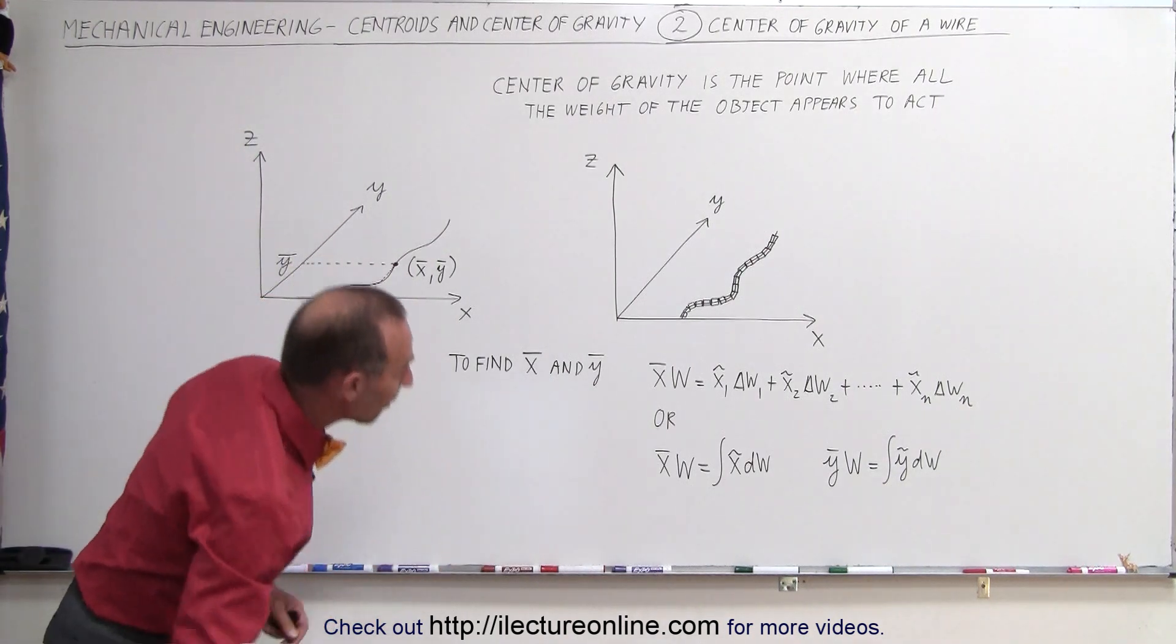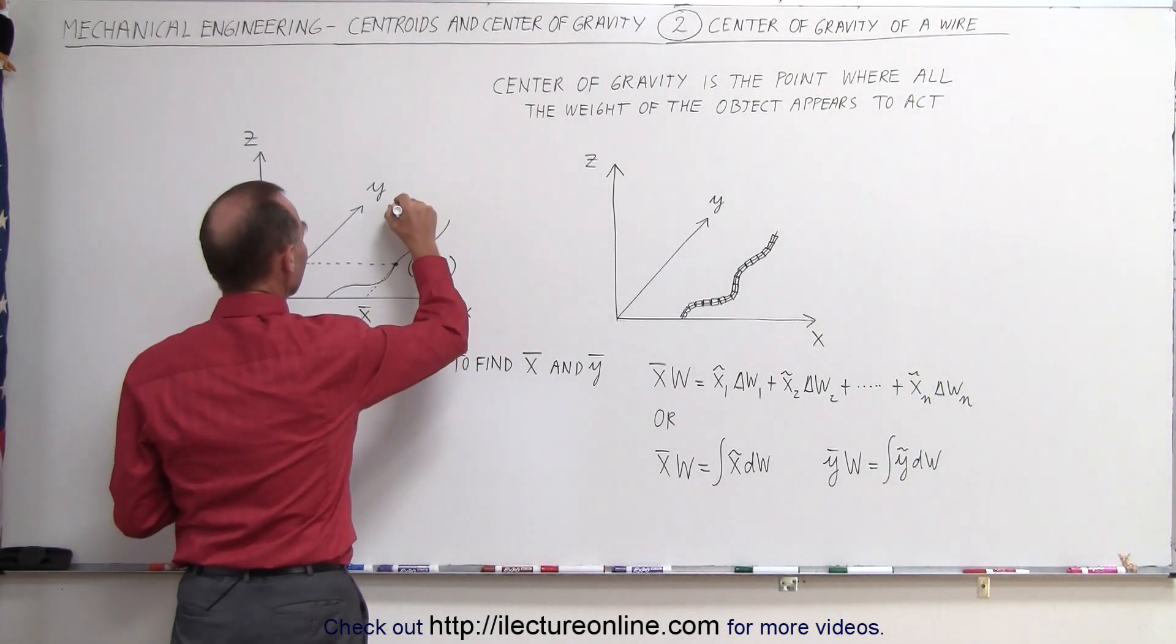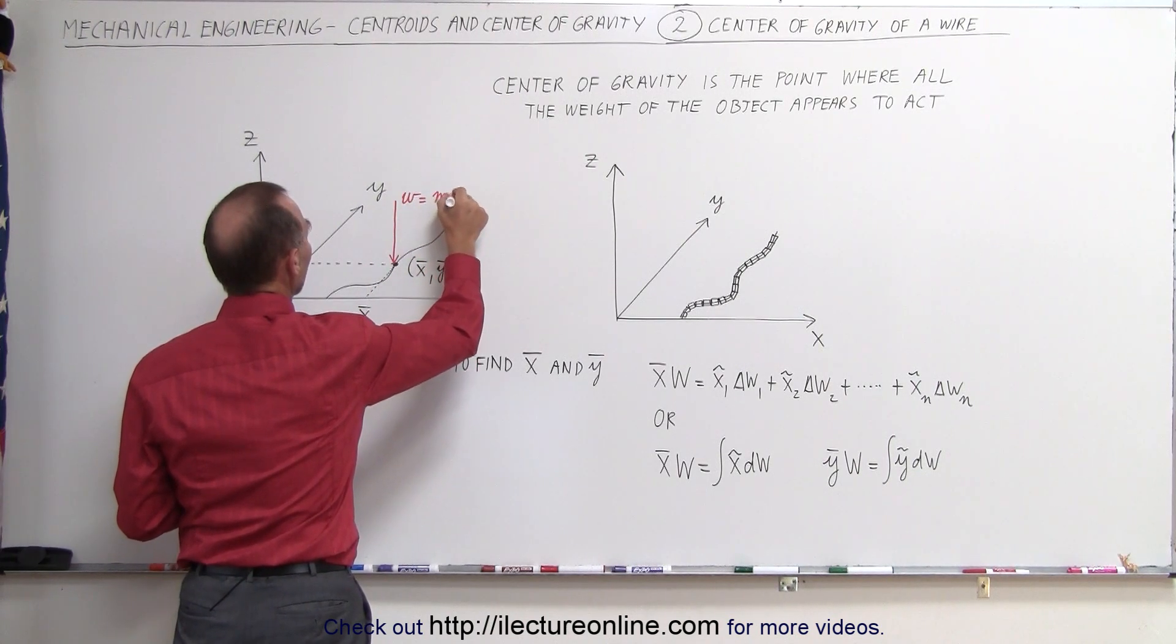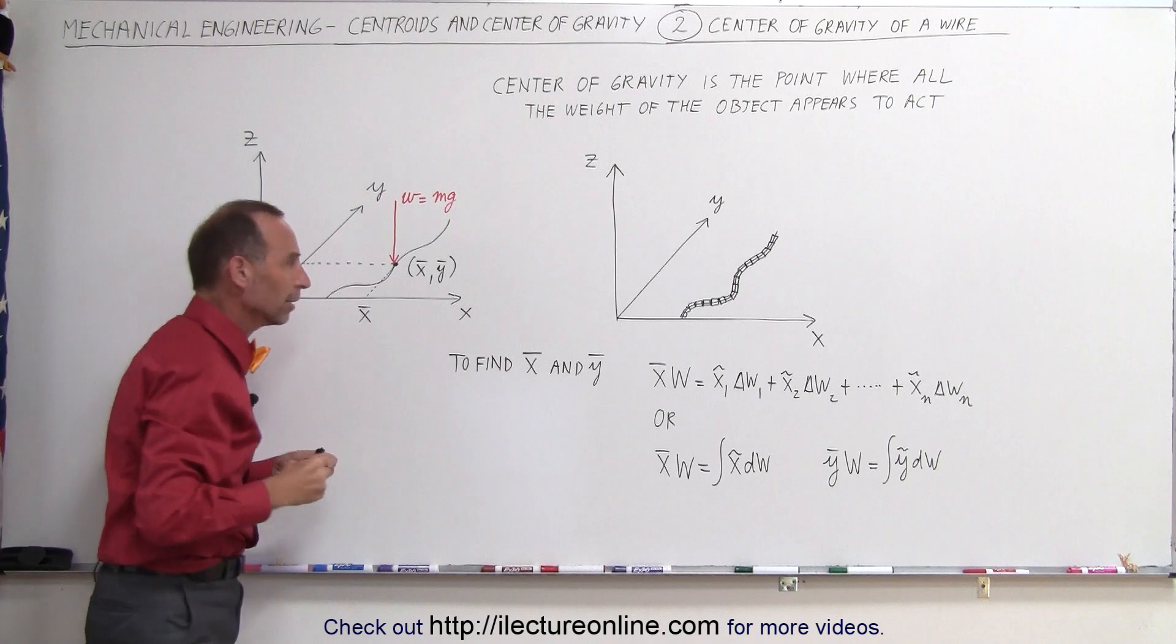Again the center of gravity is such that it appears that all the weight is acting at that particular point. So there would be equal to the weight that's equal to M times G for the whole wire.